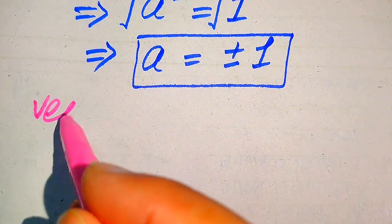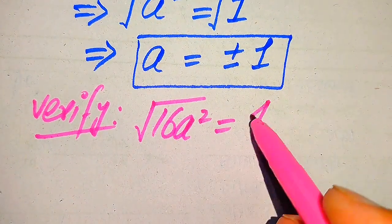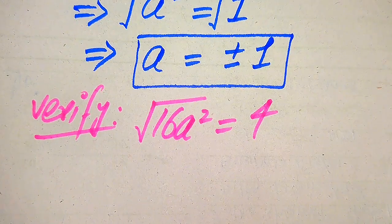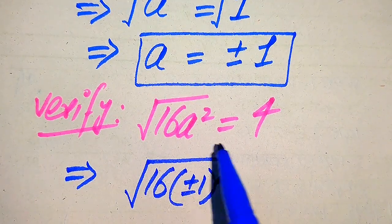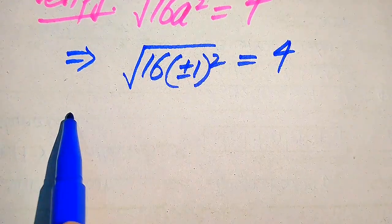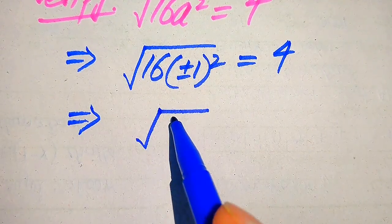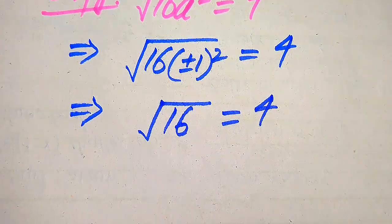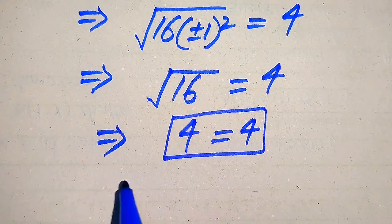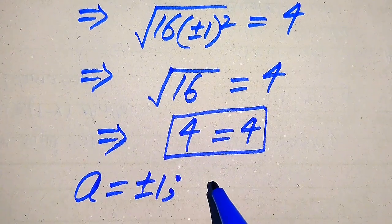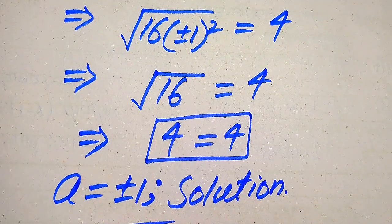For verification of both roots, we substitute both values into the given question statement: the square root of 16a squared equals 4. Putting a equals plus or minus 1, we get the square root of 16 times (plus or minus 1) squared equals 4. The square of plus or minus 1 is always positive 1, so we get the square root of 16 equals 4, which equals 4. This shows that both values a equals plus or minus 1 satisfy the given question statement. This is our final solution. Thank you so much for watching this video; please subscribe to my channel for more exciting videos.